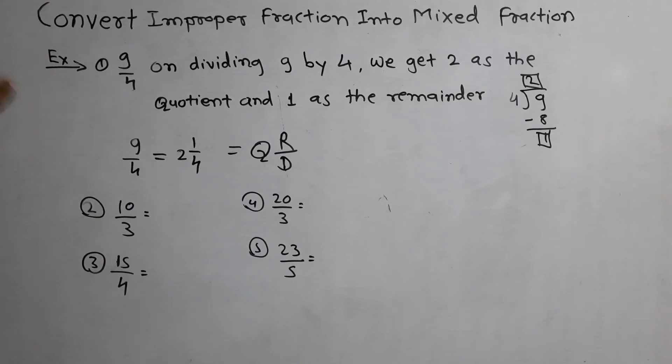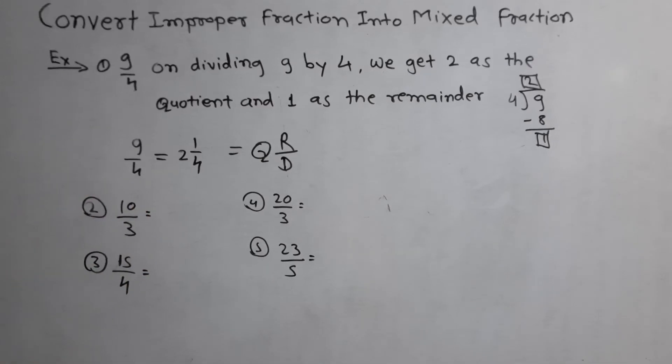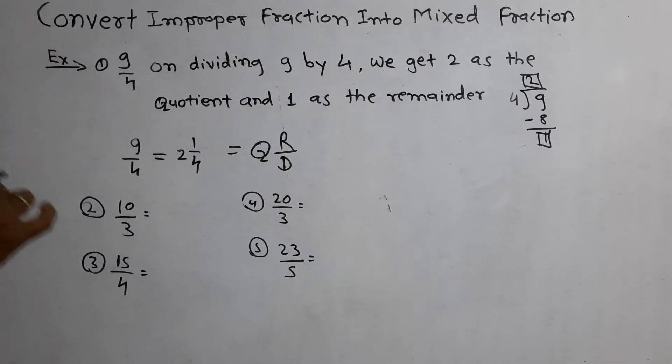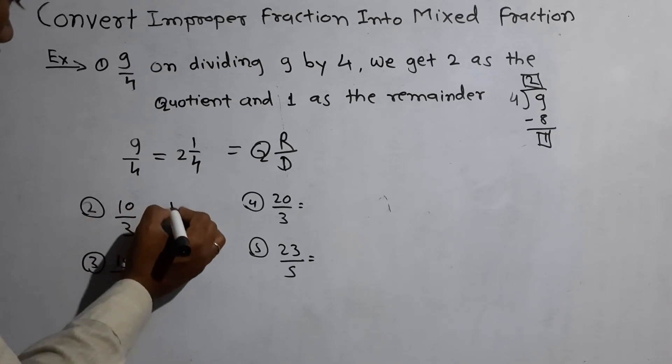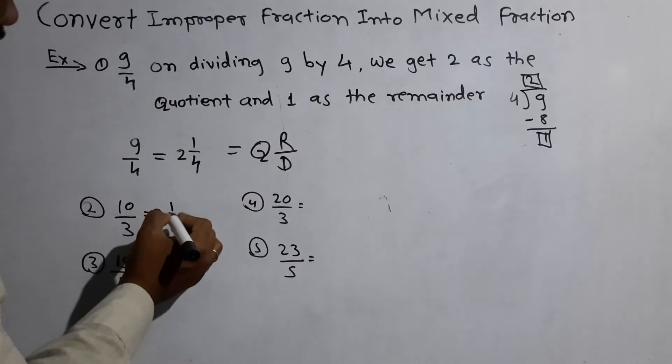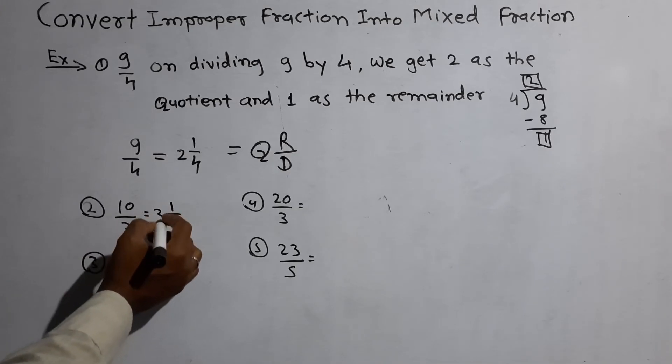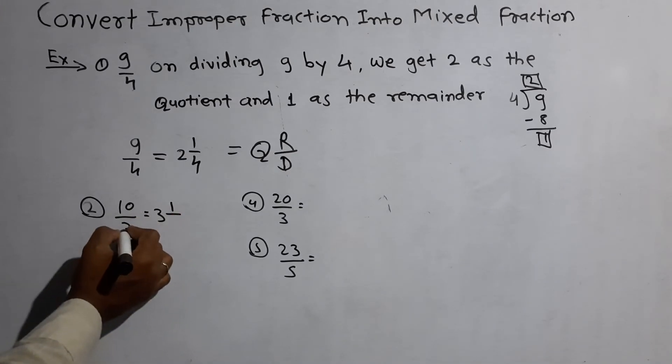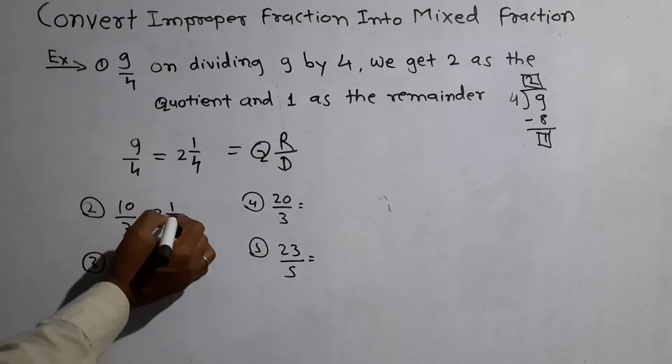Look at some other examples. 10 by 3. How to make it into mixed fraction? 3 threes are 9. Remainder 1 written on the remainder side. And quotient is 3. Denominator keeps as it is.